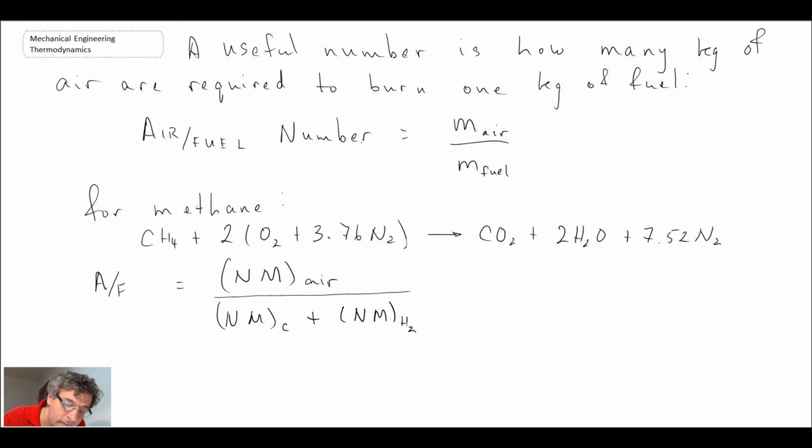For the number of moles of air, that consists of both oxygen and nitrogen, and so what we have in our balance equation is 2 times 4.76 kilomoles of air, multiplied by the molar mass for air, which we said was 28.84 kilograms per kilomole. And we want to now divide that by our balance for fuel.